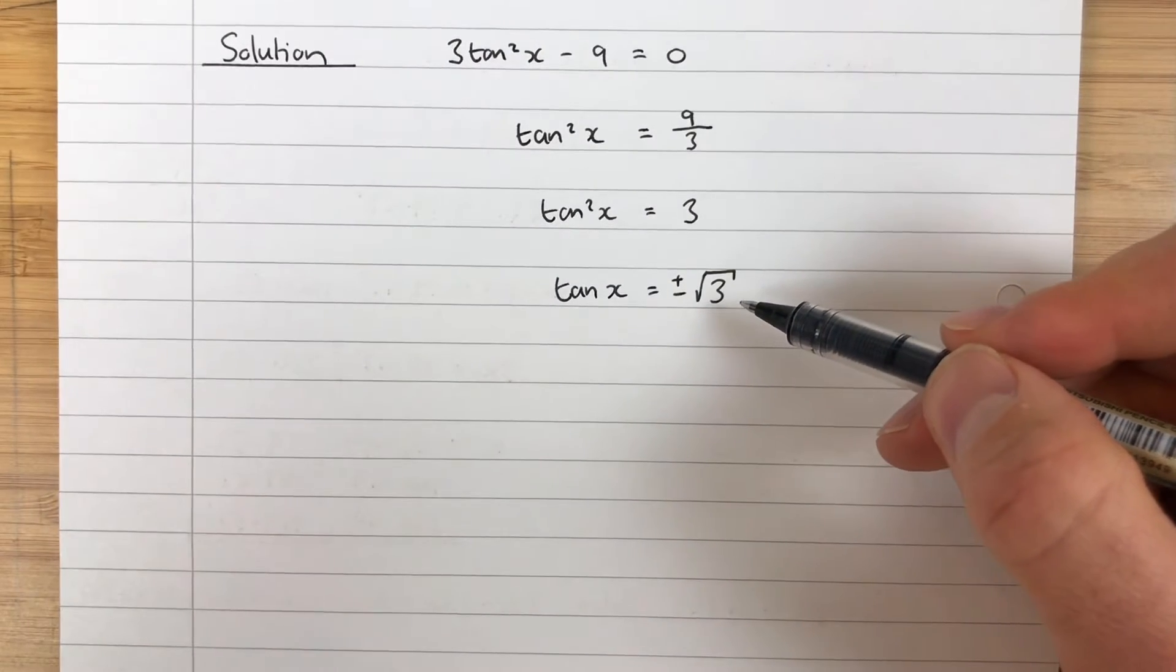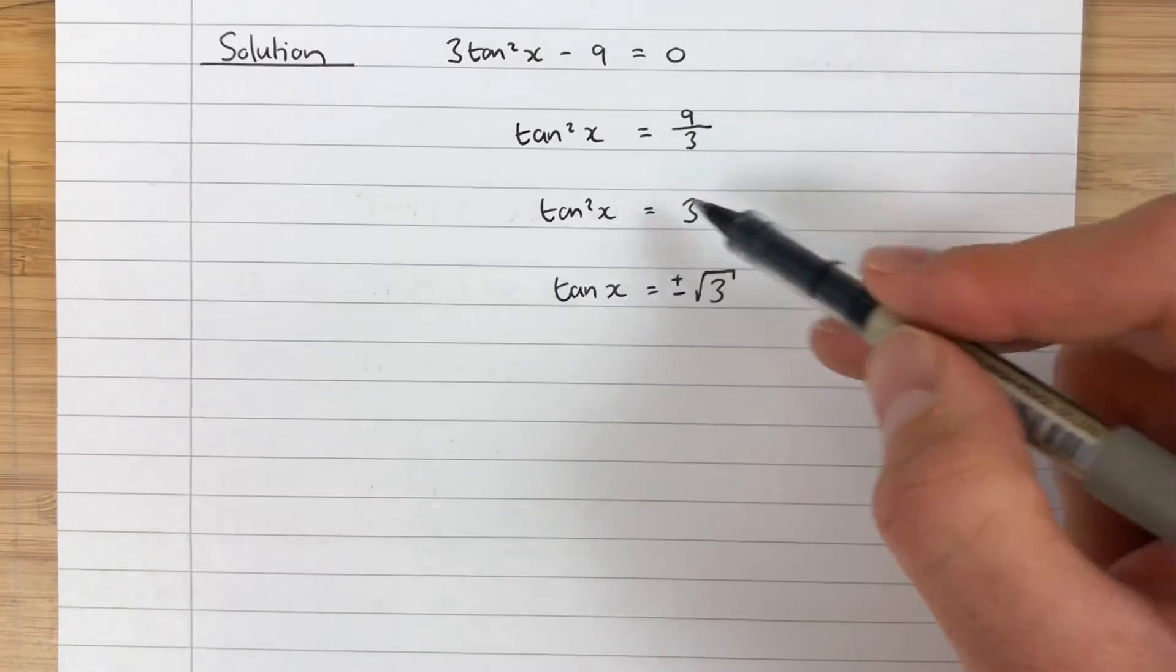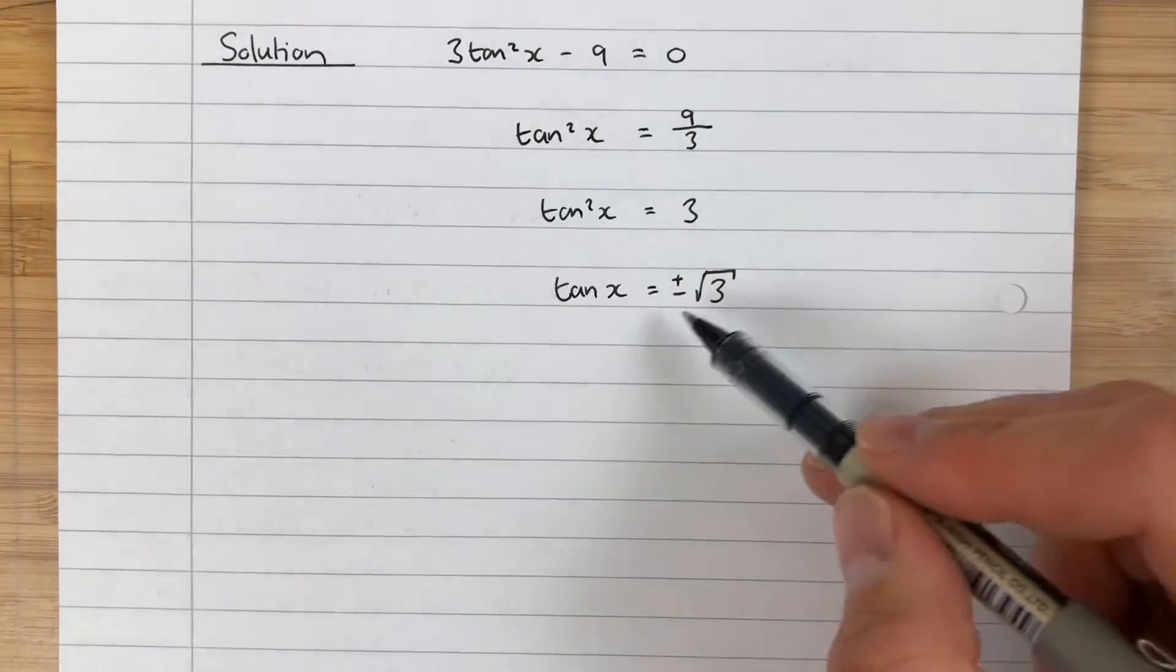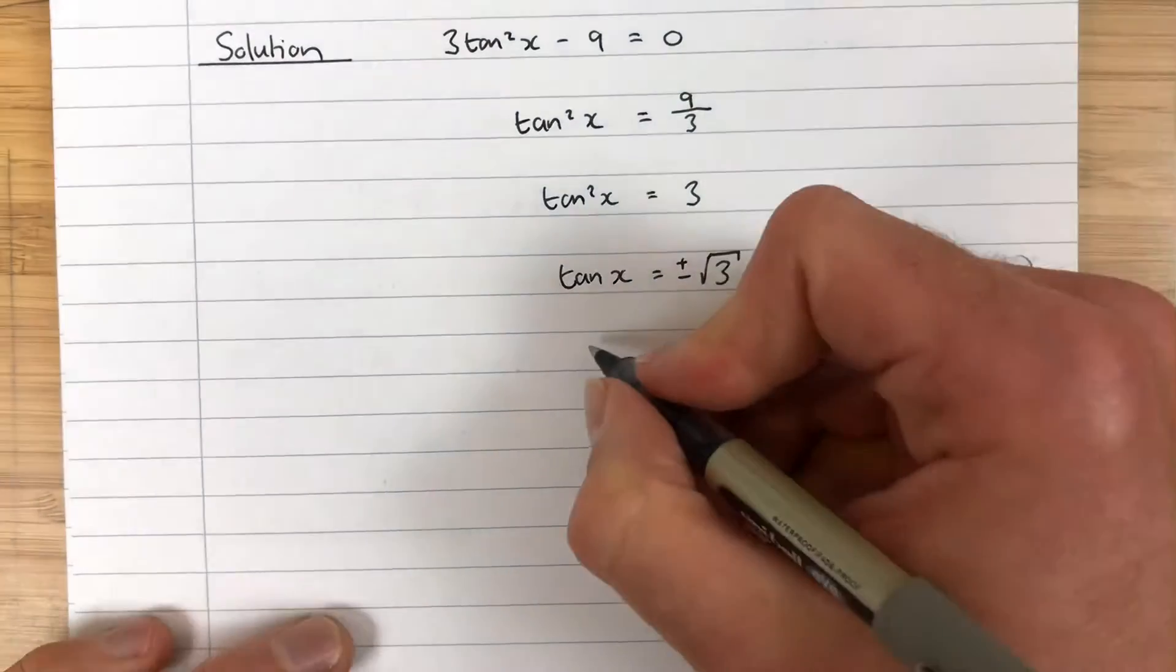When you take the square root in higher maths, you have to put a plus or minus in front of the square root. That's important. You're going to forget it every time and have us giving you a hard time about it. So tan x is plus or minus root 3.